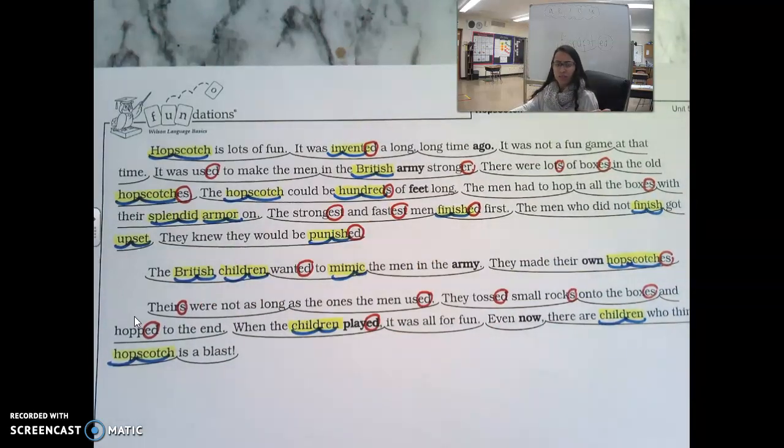What happened in that first paragraph? I just learned. I never knew this before. The hopscotch was something that was used to train British soldiers. People in the British Army. Whoa. That is so cool. There's also something that I read in here. It said splendid armor. It said that the men had to hop in all the boxes with their splendid armor. I might not know what the word splendid means. But I know that this sentence still makes sense. It means that the men had to wear their armor and do all the hopscotches. That's very interesting. Now splendid could mean a good thing. It was awesome armor, amazing armor. That's what splendid means.